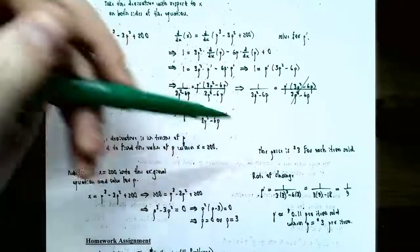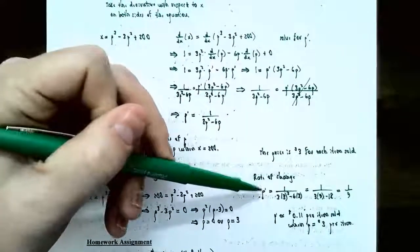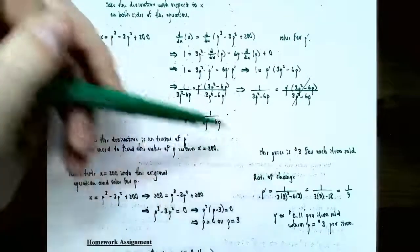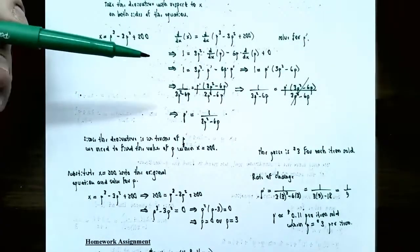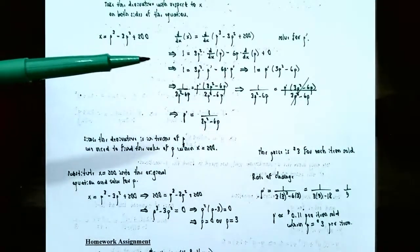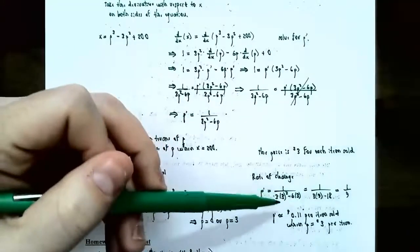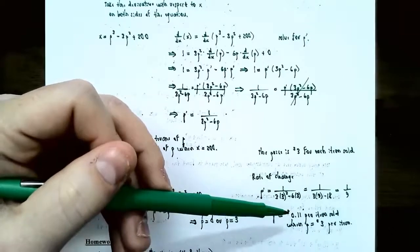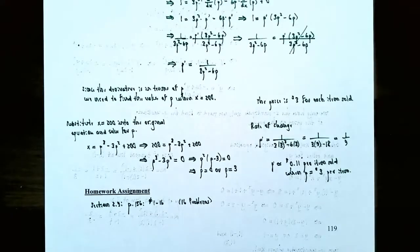Now use p equals 3 in the derivative: p prime equals 1 divided by (3 times 3 squared minus 6 times 3), which gives 1 ninth. Approximating to two decimal places, p prime is approximately 0.11, meaning the price is changing by about 11 cents per item sold when the price is $3. This finishes our video on implicit differentiation to find the slope of the tangent line or a rate of change. If you have any questions about any examples, please let me know, and I'll see you in the next video when we talk about related rates.